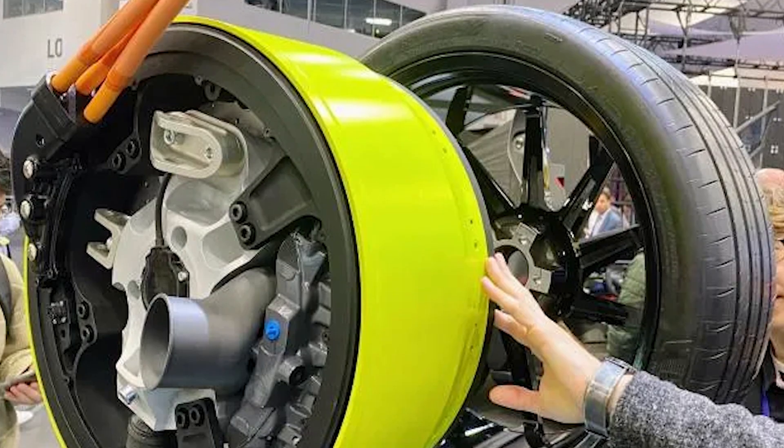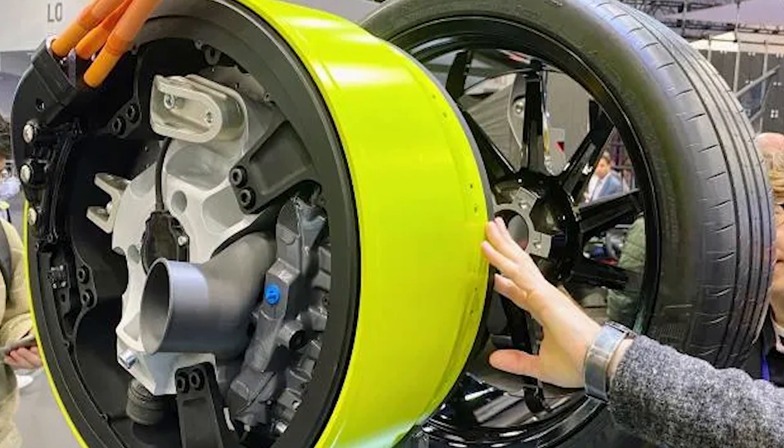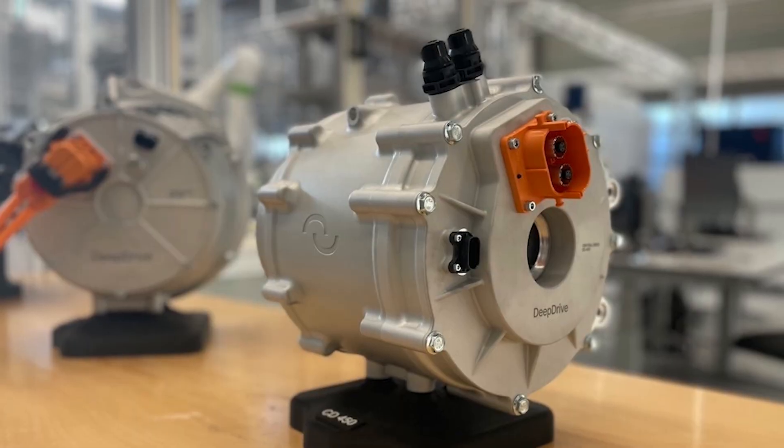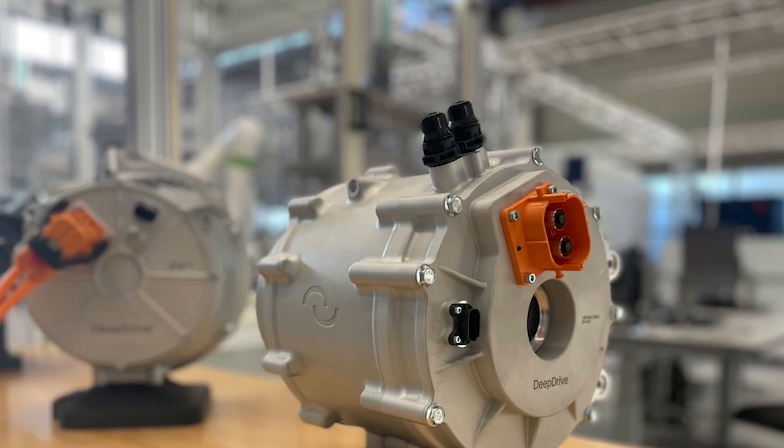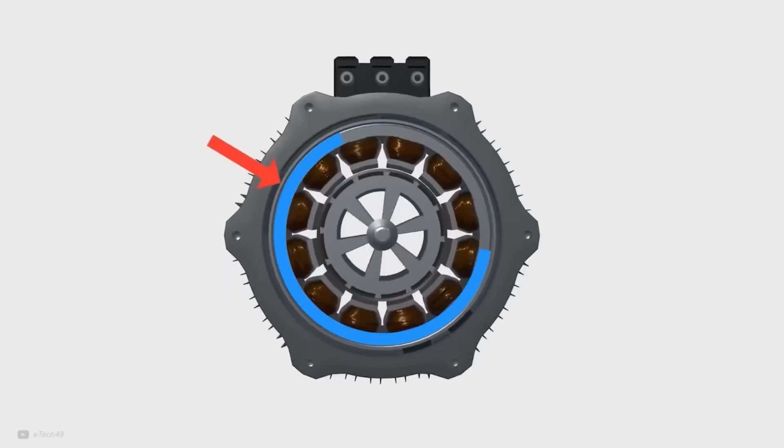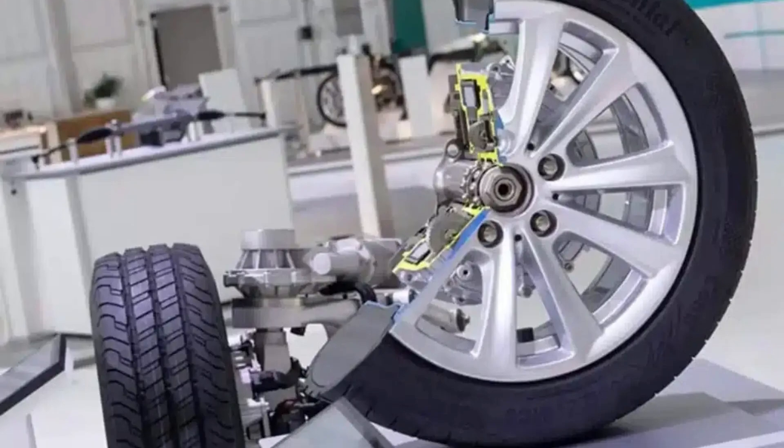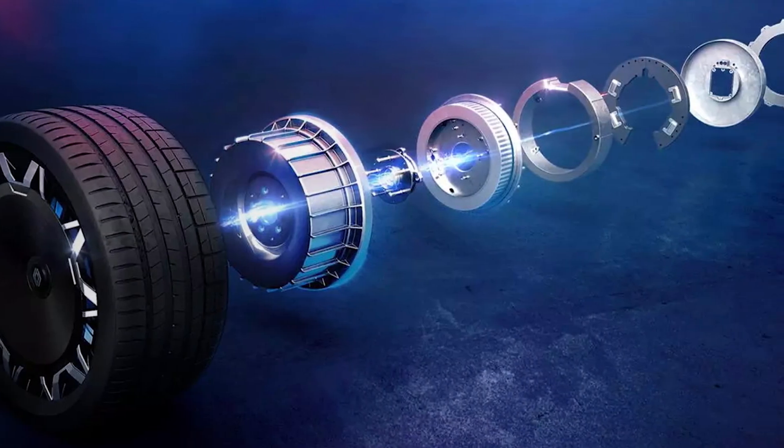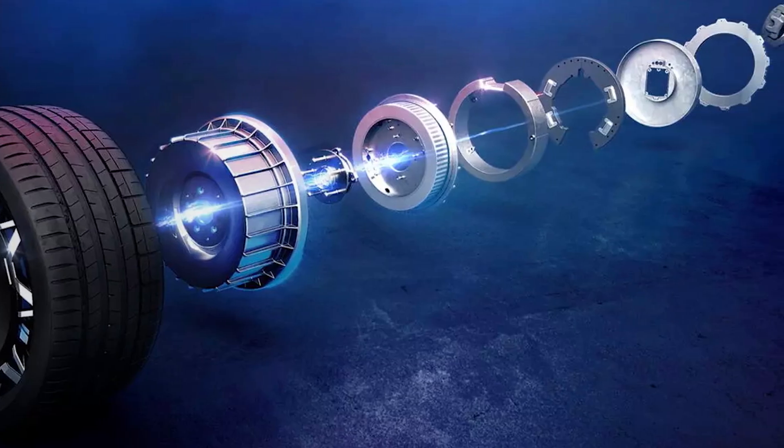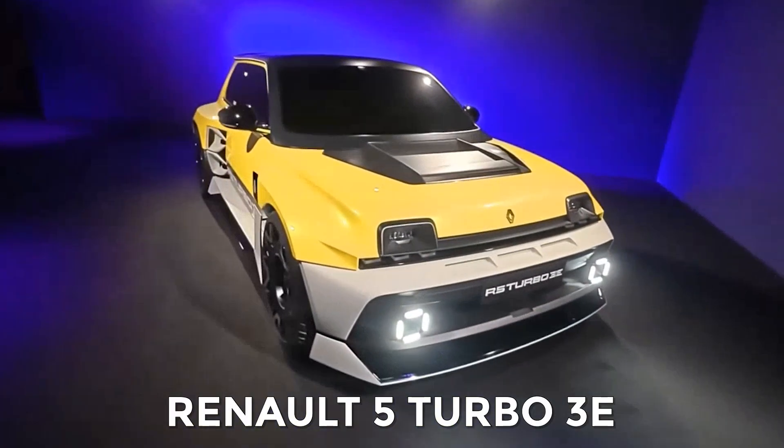Many people worry about in-wheel motors adding unsprung mass, which can affect handling. But in practice, the DeepDrive system is light enough that the effect is small. Suspension systems today are far better at controlling wheel motion, and lighter in-wheel motors are now becoming more common.